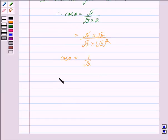This implies theta equals cos inverse of 1 upon root 2, which implies theta equals 45 degrees, that is, theta equals pi by 4.